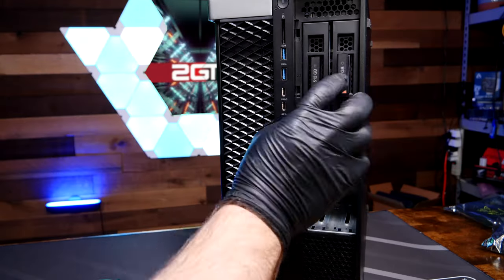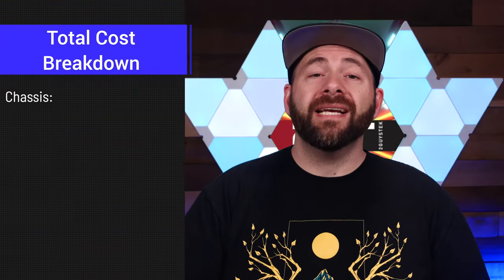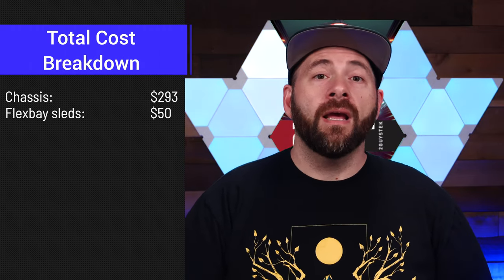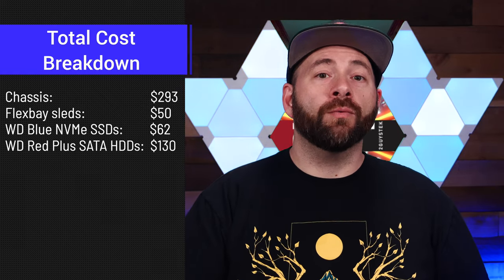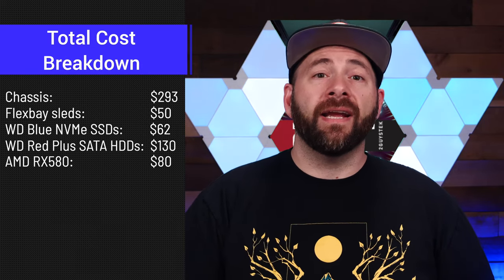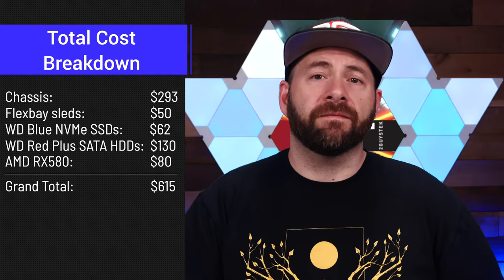GPU mounted, flex bays inserted, hard disks inserted — that's all there is to it. Let's talk about the total price since cost transparency is important. The chassis cost $293, the two flex bay sleds cost $50, the two WD Blue 500GB NVMe SSDs were $62, the two Western Digital Red Plus 4TB drives were $130, and the RX 580 off eBay goes for around $80 — making the grand total for this build $615.